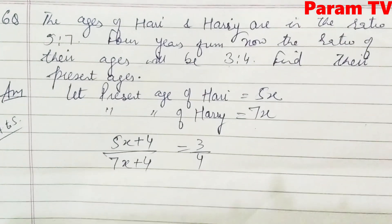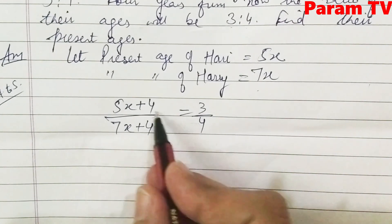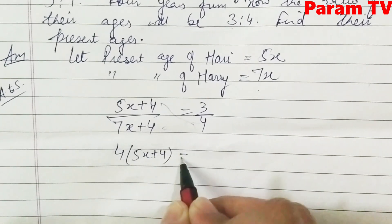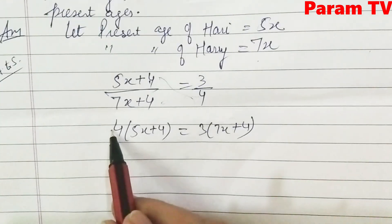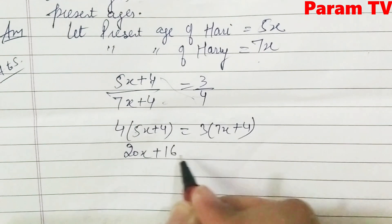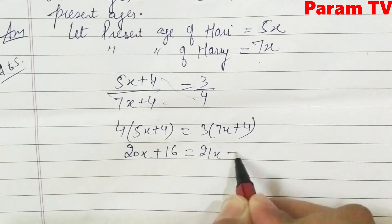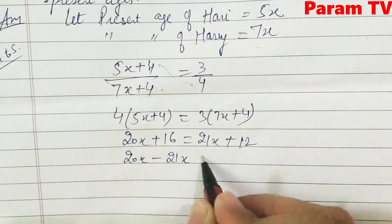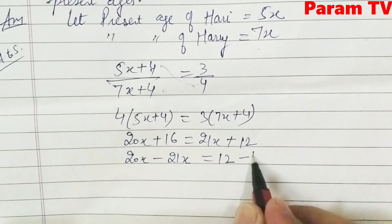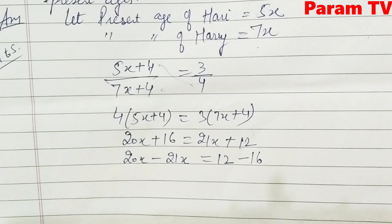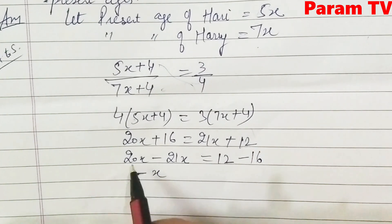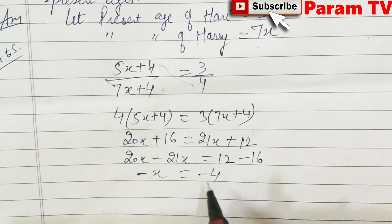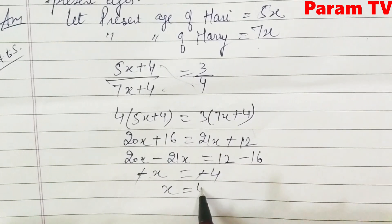This is the same type of sum — solve by cross multiplication. So: 4(5x + 4) = 3(7x + 4). Expanding: 20x + 16 = 21x + 12. Transposing: 20x − 21x = 12 − 16, so −x = −4, therefore x = 4.